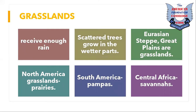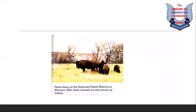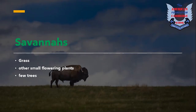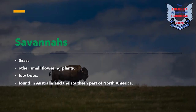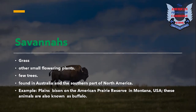Savannas are grasslands in tropical and subtropical regions with few trees. Some of the most well-known savannas include the Serengeti plains of Tanzania, the vast acacia plains of East Africa, and the Australian savannas. Savannas have grass, small flowering plants, and few trees. There are also savannas in Australia and the southern part of North America. Plains bison found on the American prairie reserves in Montana, USA — also known as buffalo — can be seen in this picture.